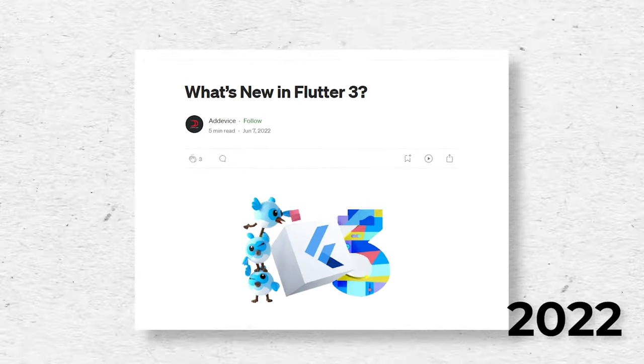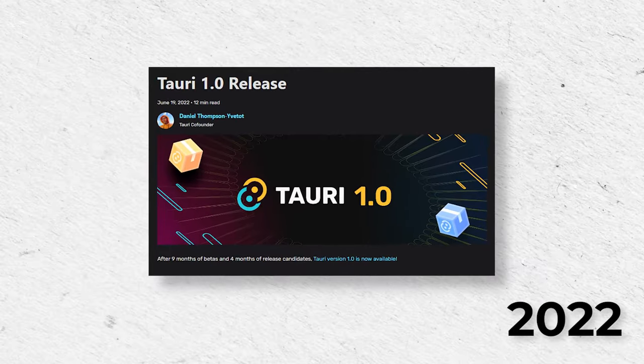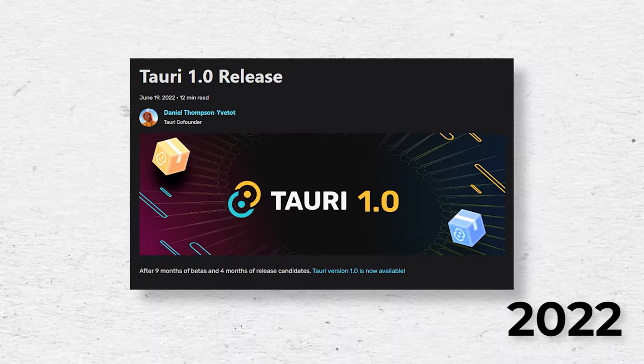2022 saw a new release of Flutter — version 3 — and we also got Tauri version 1. Tauri has been at the top of a lot of satisfaction ratings lately, and it's built around Rust, which makes it super interesting.